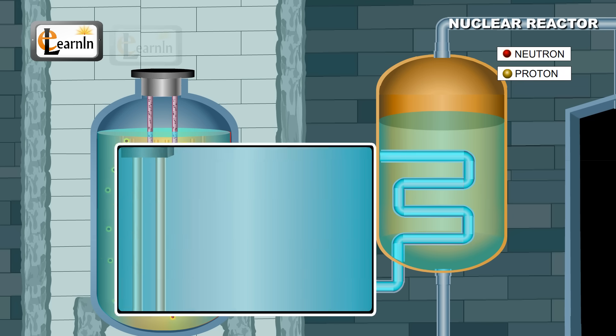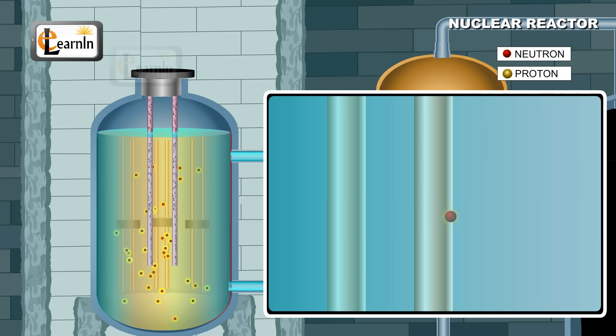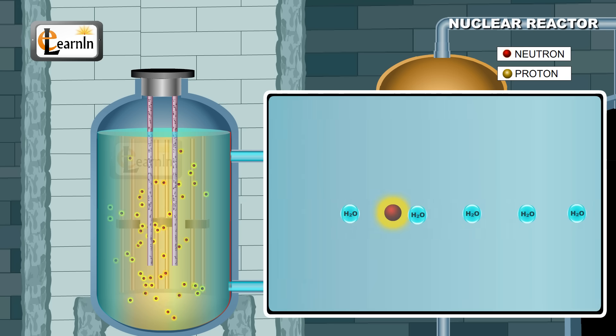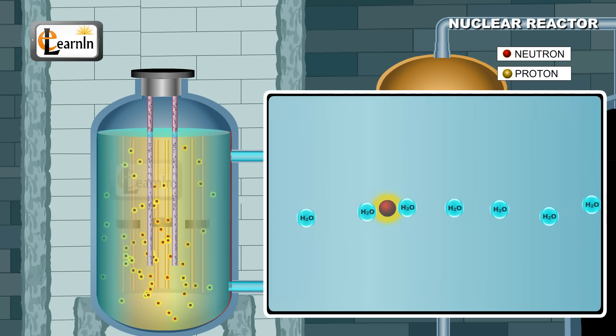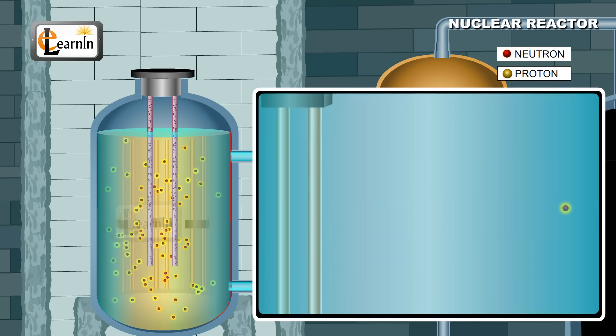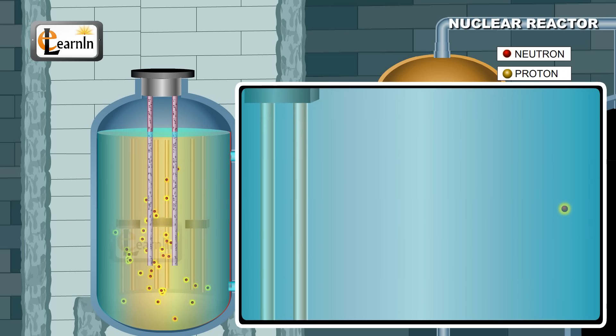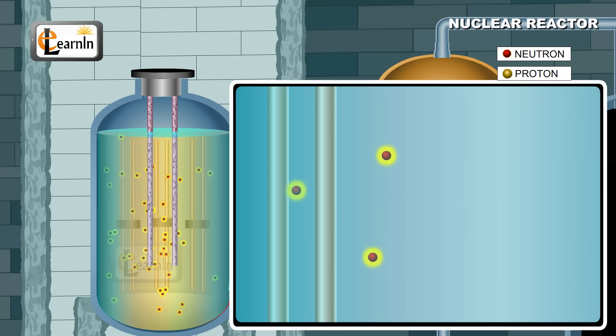Water molecules in the moderator are useful in slowing down the high energy neutrons which leave the fuel element after nuclear fission. These high energy neutrons collide with water molecules, thereby losing out on some energy with every collision and therefore slowing down substantially. A new fission reaction can now be triggered using this slow neutron by striking it with a fuel element.